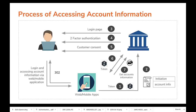Next, the TPP should request for an application access token, which will be obtained through the client credentials grant type. After obtaining the application access token, the TPP should create a consent, and upon successful creation, will receive a consent ID. Next, the PSU should authenticate with the bank and approve the consent. After approving, the PSU will be redirected back to the TPP with an authorization code. The TPP then exchanges this code for a user access token through an authorization code grant type. Finally, the TPP can invoke the accounts API or payments API to retrieve the necessary information.